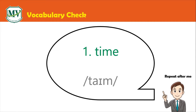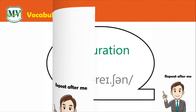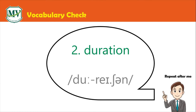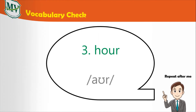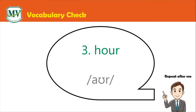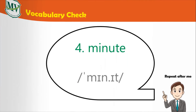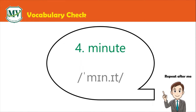Let's try how to read this vocabulary list first. Repeat after me. Number one: Time. Number two: Duration. Number three: Hour. Number four: Minute.